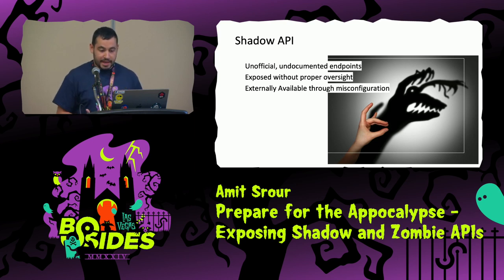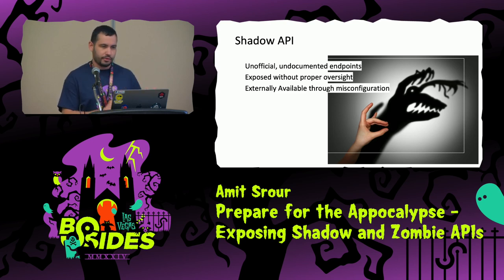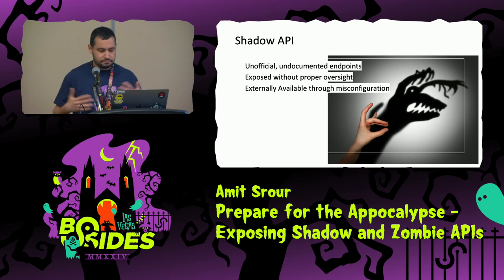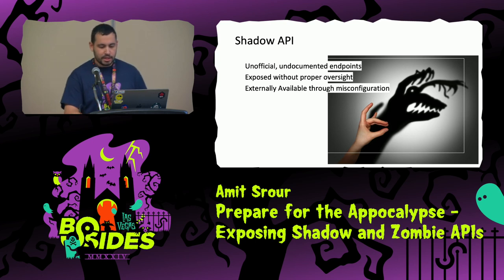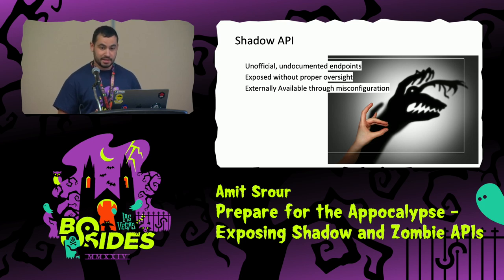Shadow APIs are the official undocumented endpoints that are being exposed through configuration issues, human error, or LLM mistakes, and they are still externally available through the gateway. Most of the issues with shadow APIs are that they are not part of the security review process and often lead to areas of the organization that are not being tested by security teams.